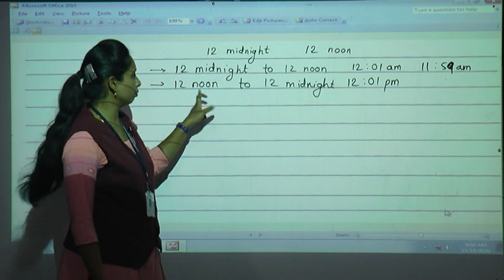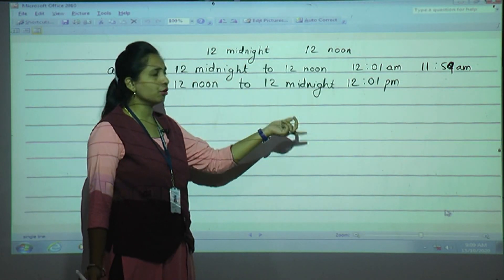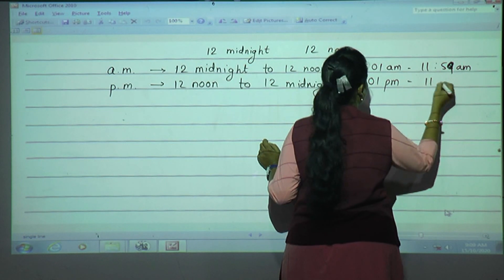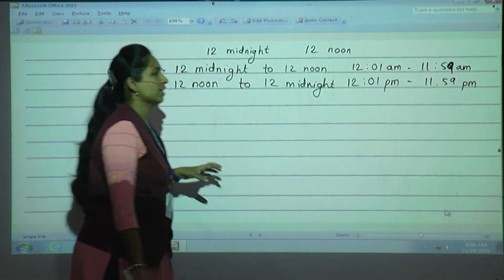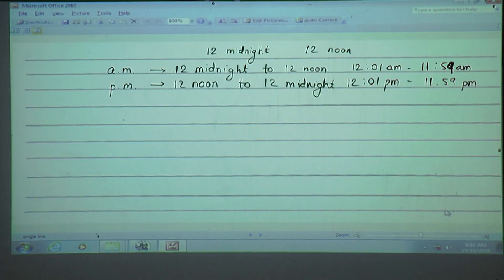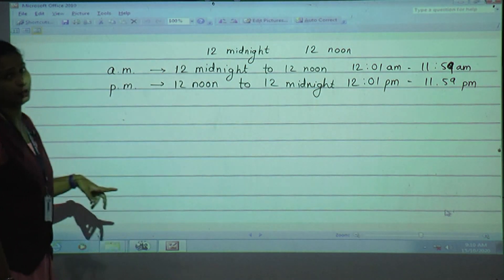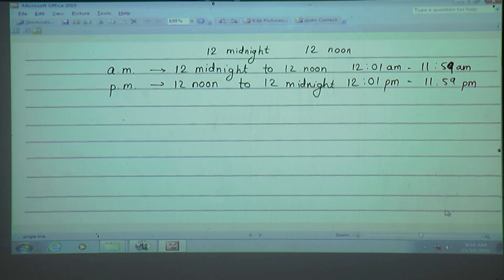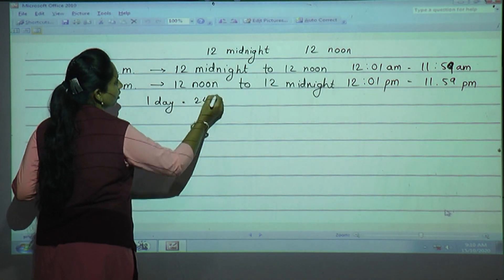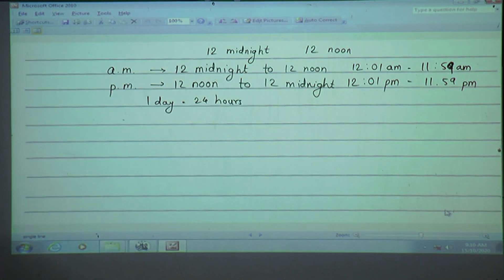Exactly at 12 noon you write 12 noon. If one minute passes — 12:01 — it becomes PM. PM continues till 11:59 PM, and when it converts back to 12, it becomes 12 midnight AM. A day begins at 12 midnight and ends again at 12 midnight. There are 24 hours in one day.